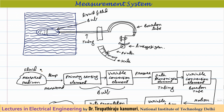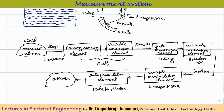Mapping this to functional blocks: the liquid bulb acts as the primary sensing element and variable conversion element, converting temperature into pressure. The tubing transmits the pressure. The Bourdon tube acts as another variable conversion element, converting pressure into linear motion. The linkage-gear mechanism acts as the variable manipulation element, amplifying the motion. Finally, the scale and pointer act as the data presentation element.